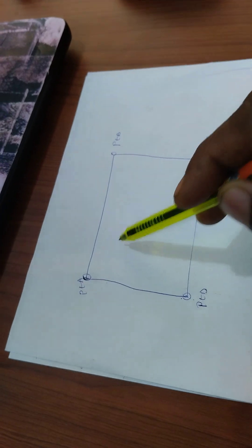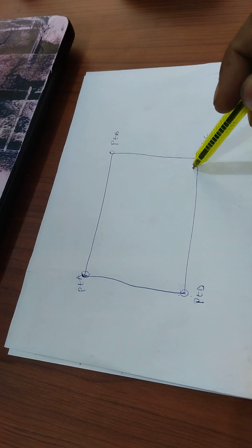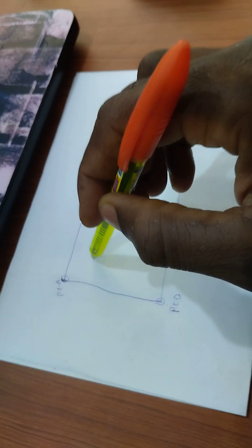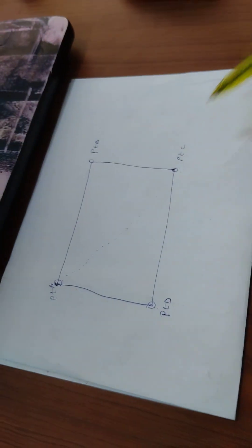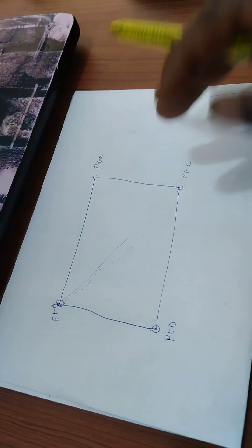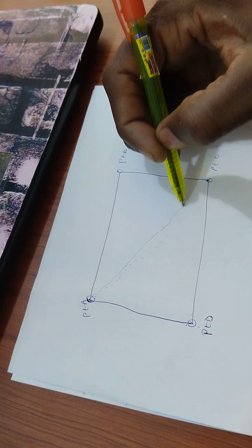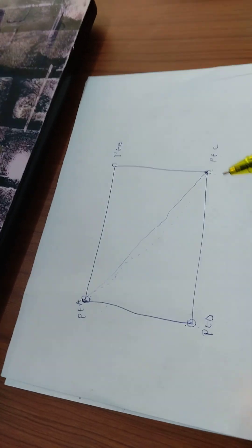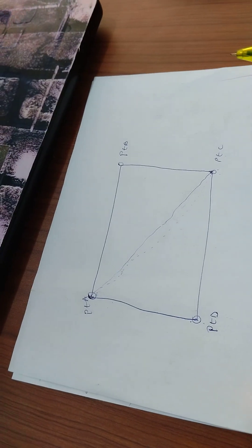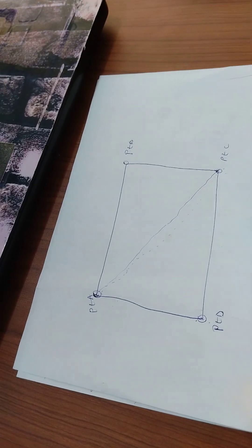So after you are done with that, you now measure the diagonal, which is the baseline. That is, you measure the baseline. So you measure from A to C. That will serve as a baseline.